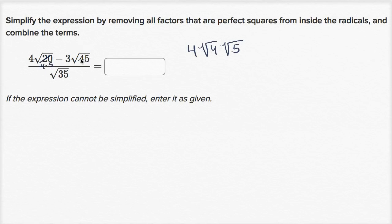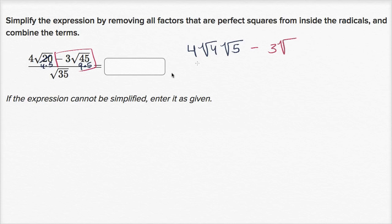And 45 is the same thing as nine times five. The reason I'm thinking about four and nine is because those are perfect squares. So I can write this as four times the square root of four times the square root of five, minus three times the square root of nine times the square root of five, because the square root of 45 equals the square root of nine times the square root of five.